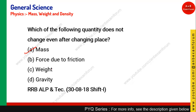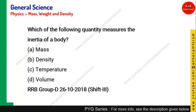Remember: weight is the force exerted due to acceleration due to gravity, so it can change from one place to another. The value of g can vary from one planet to another and from one place to another. So for this question, option A is the right answer.